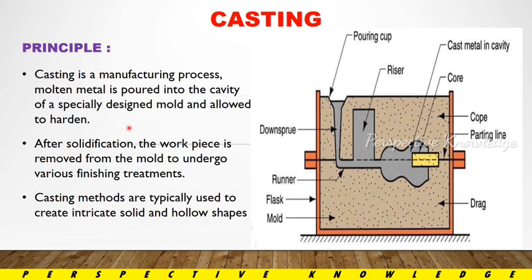First of all, what is manufacturing, what is production? Manufacturing is converting a raw material into a product.